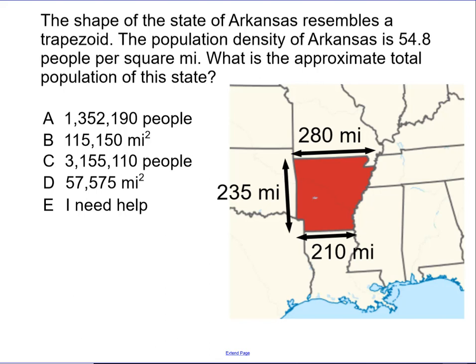The shape of the state of Arkansas resembles a trapezoid. The population density of Arkansas is 54.8 people per square mile. What is the approximate total population of this state?